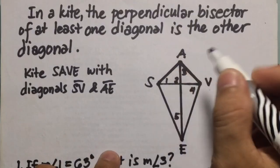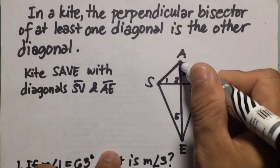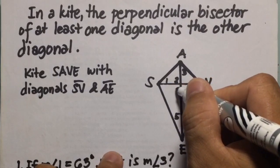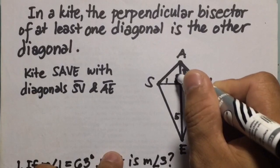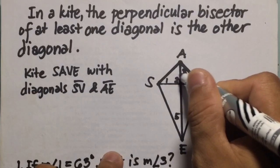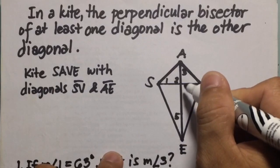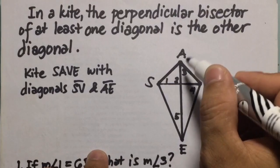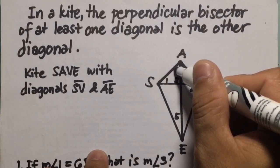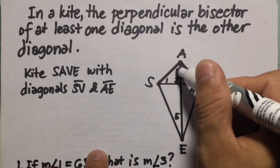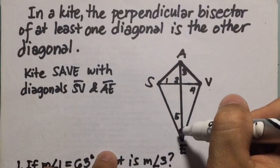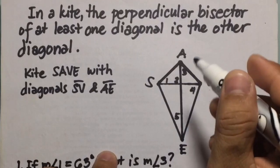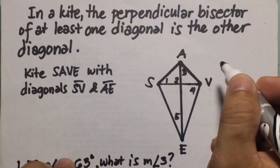What we mean by perpendicular bisector is that these two diagonals form four right angles. So this angle here is a right angle, this is also a right angle, angle 2 here is also a right angle, and this angle here is also a right angle or 90 degrees. And if it is a bisector, it means that the diagonal is divided into two congruent parts at the top and also at the bottom.